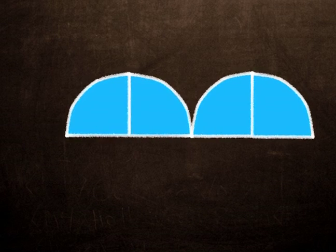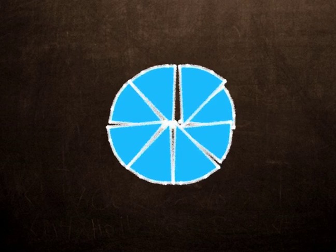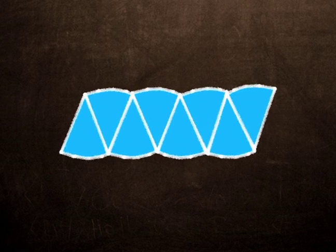But we'll now divide the circle into eight equal pieces. Now, this still doesn't really look like a parallelogram, but we're getting closer.